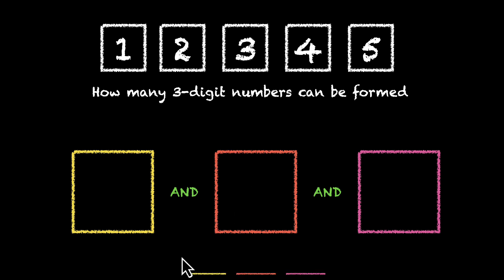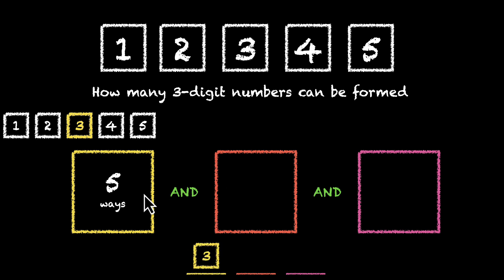We have to fill these 3 digits. For this first one, for this yellow box, how many options do we have? Well, we have 1, 2, 3, 4 and 5. We have these 5 options to pick from. So I'm going to write down 5 ways. This part of the job can be done in 5 ways. What happens when we actually go ahead and pick a digit? Let's say we pick 3. 3 comes here. We have filled the yellow box.